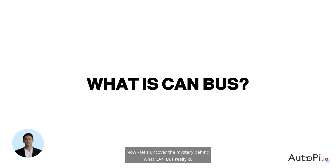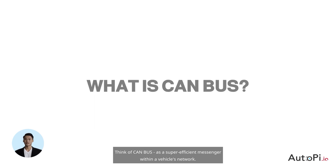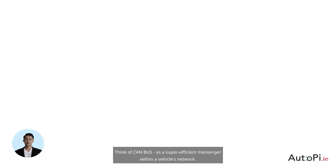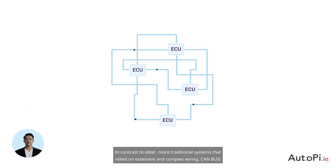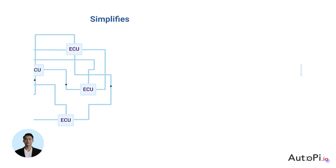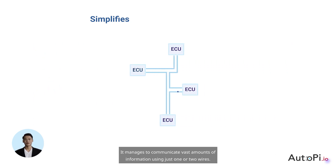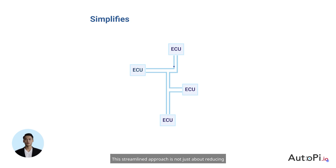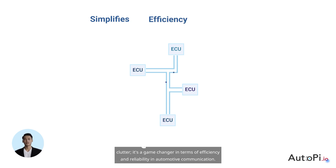Now let's uncover the mystery behind what CAN bus really is. Think of CAN bus as a super-efficient messenger within a vehicle's network. In contrast to older, more traditional systems that relied on extensive and complex wiring, CAN bus simplifies this immensely — it manages to communicate vast amounts of information using just one or two wires. This streamlined approach is not just about reducing clutter; it's a game-changer in terms of efficiency and reliability in automotive communication.